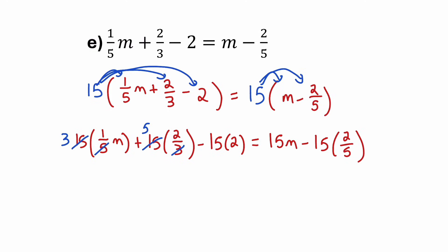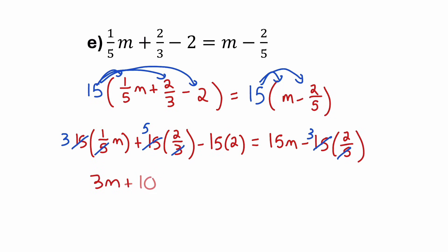At the end, I have another 15 divided by 5, which is 3. So all the fractions are gone. On the left side, I have 3 times 1M — that's 3M — plus 5 times 2 which is 10, minus 15 times 2 which is 30. On the right, I have 15M minus 3 times 2, which is 6. I can collect 10 minus 30 to make it negative 20.